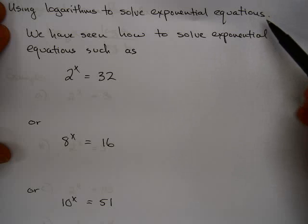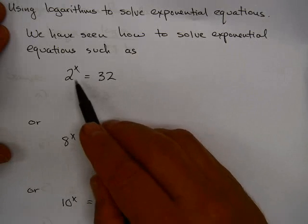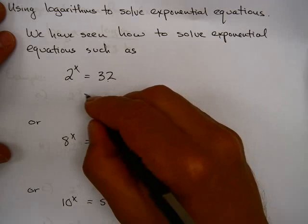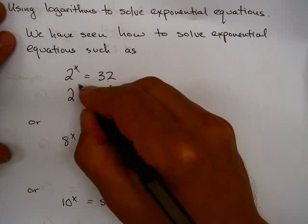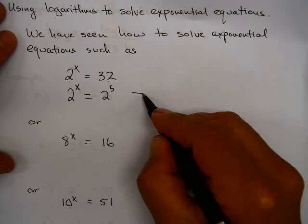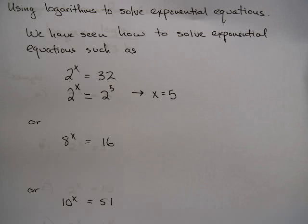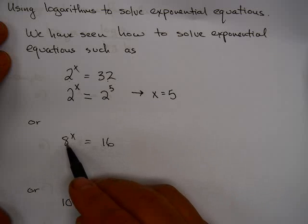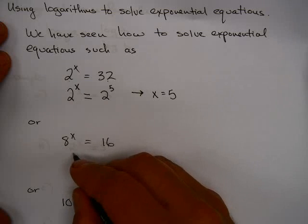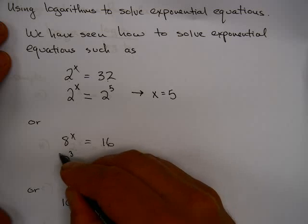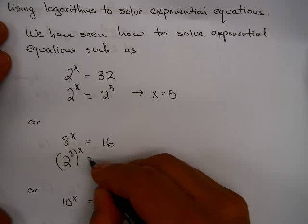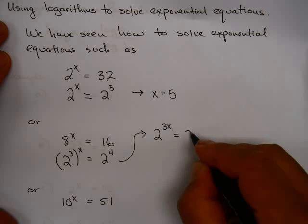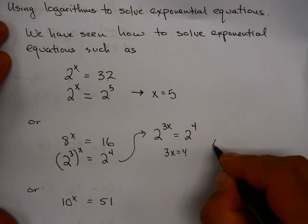Let's use logarithms to solve exponential equations. We've seen how to solve exponential equations such as 2 to the x equals 32 by finding a common base. In this case, 32 is 2 to the 5th power, so you rewrite the equation as 2^x = 2^5, which implies x equals 5. For a slightly more complicated problem, 8^x = 16: since 16 is not a power of 8, we use base 2. Replacing 8 with 2^3 gives (2^3)^x = 2^4, so 2^(3x) = 2^4, meaning 3x = 4 and x = 4/3.